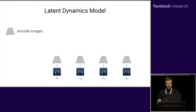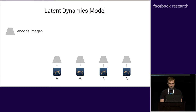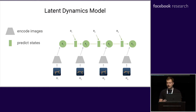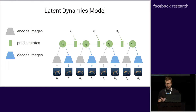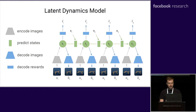To learn the world model, we first encode the images from the replay buffer. We then predict forward a compact state sequence given those embeddings and the sequence of actions. From the latent states, we decode the images to provide a rich training signal. We also predict rewards which are needed during planning.